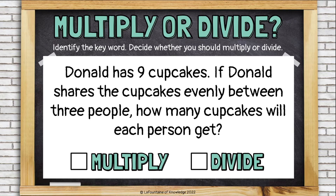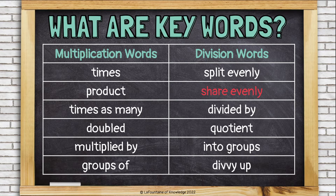Times as many usually means multiplication. Donald has 9 cupcakes. If Donald shares the cupcakes evenly between 3 people, how many cupcakes will each person get? 'Shares evenly' — those are division words. It means he's dividing up the cupcakes between those 3 people. Shares evenly usually means to divide.